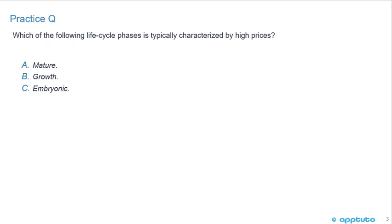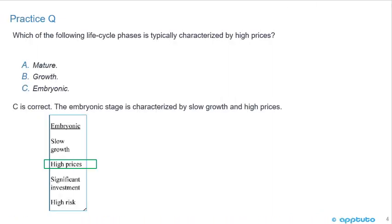Practice question: Which of the following lifecycle phases is typically characterized by high prices? A, mature; B, growth; or C, embryonic? C is correct. The embryonic stage is characterized by slow growth and high prices. Think of iPhones when they first came out — smartphones were very highly priced when they initially launched.